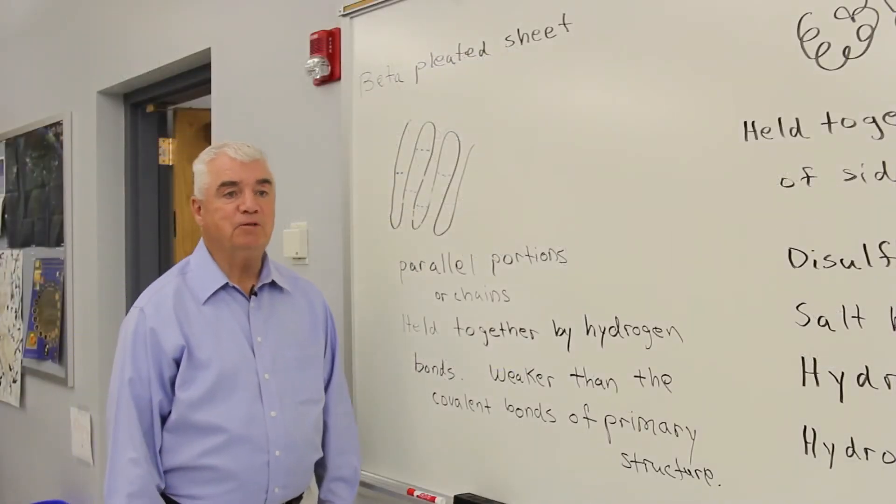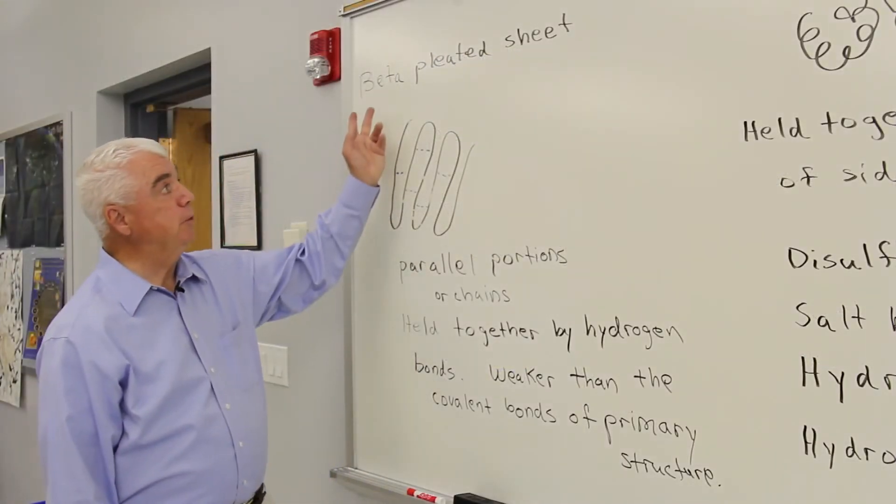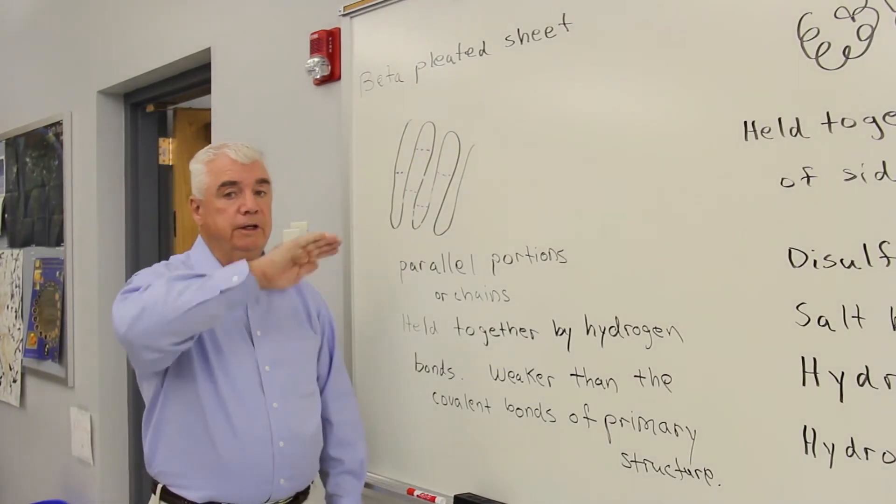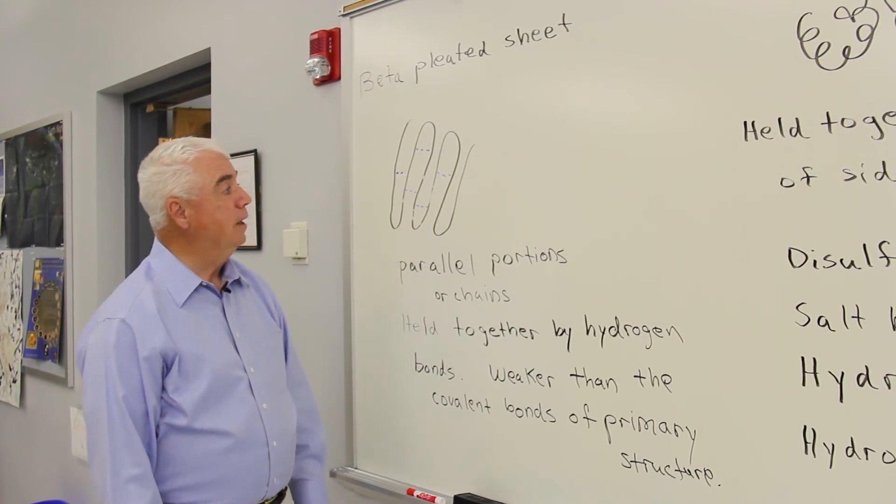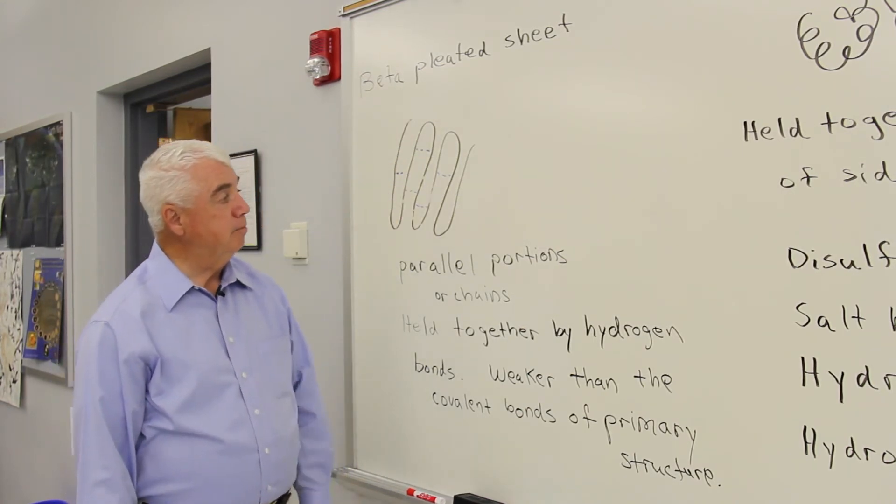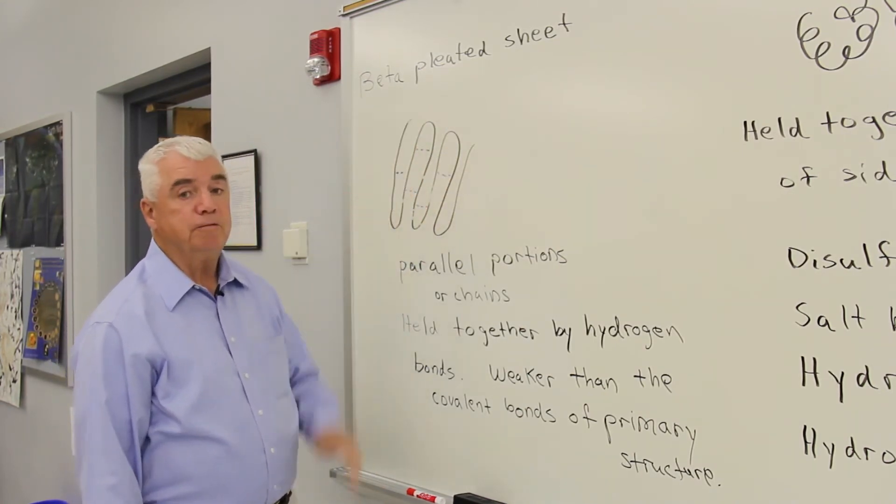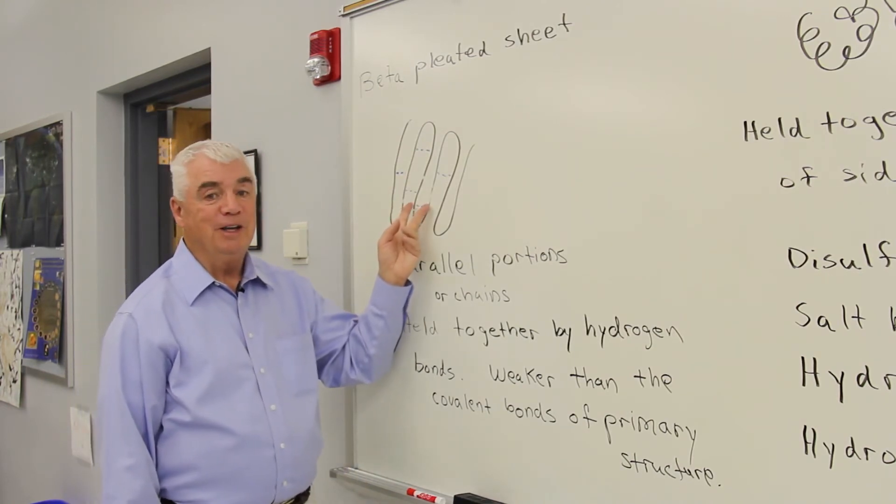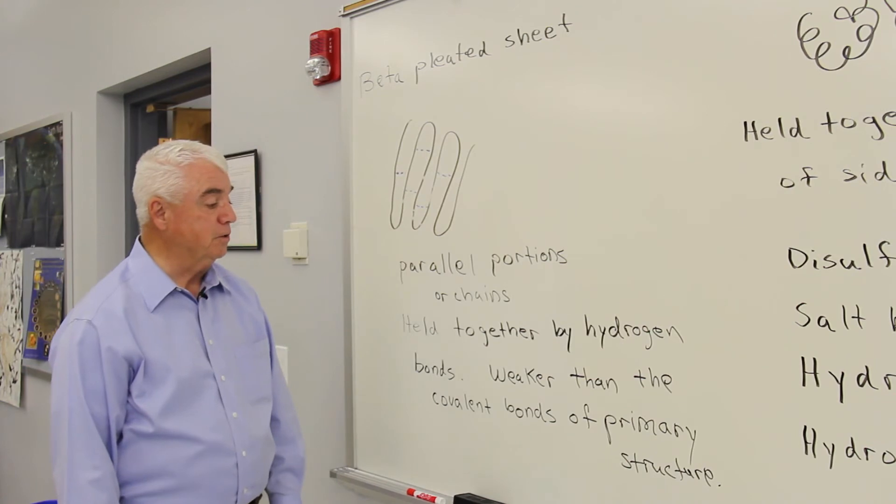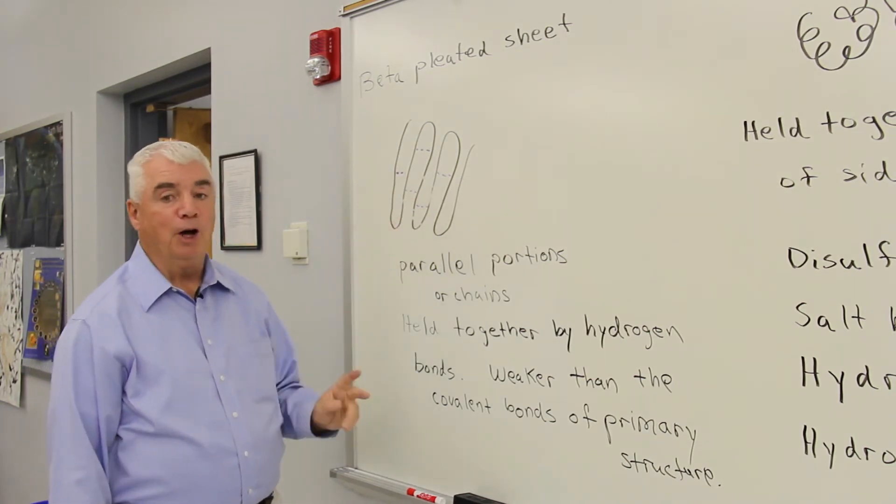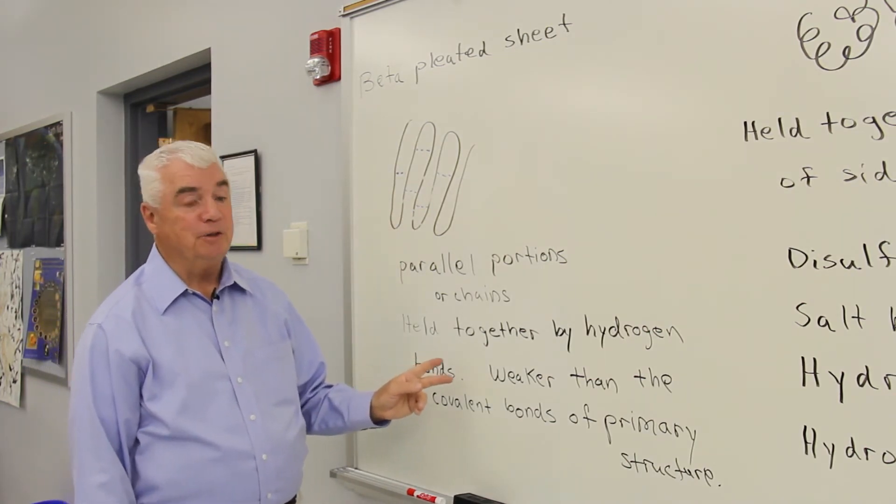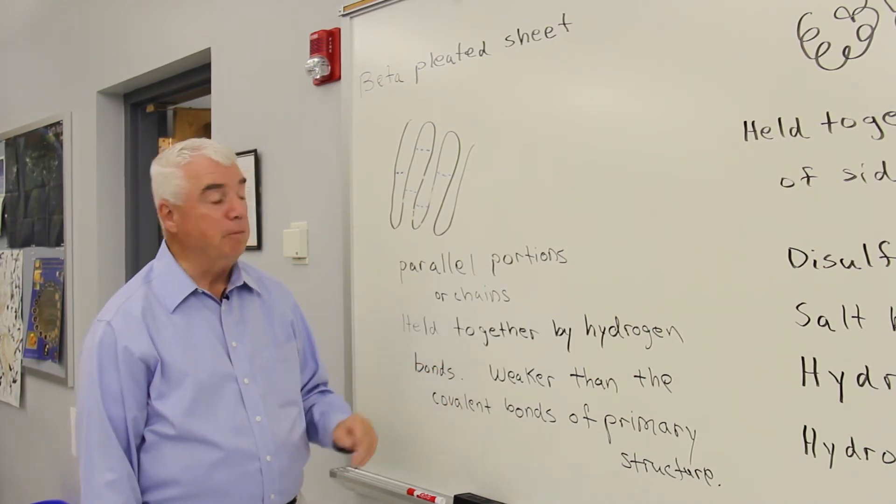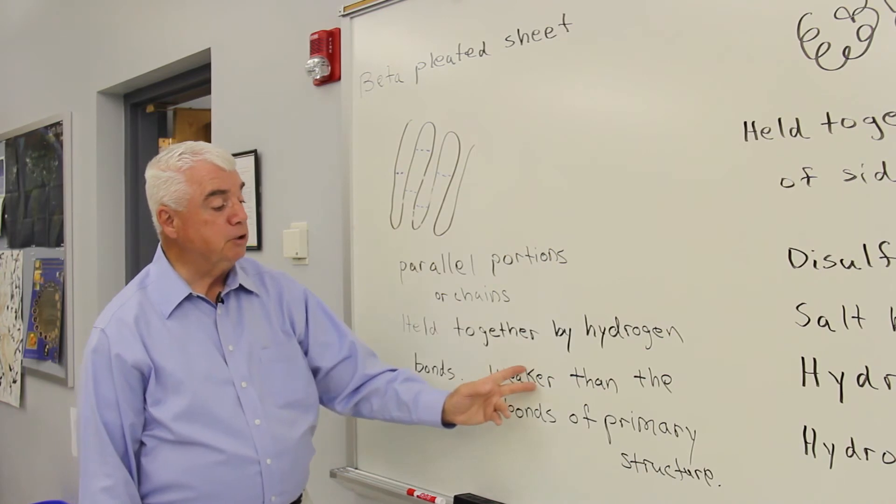Let's look at the second type of secondary structure. The second type of secondary structure is referred to as beta pleated sheet. It's sort of a quilted structure rather than a helical form where we have parallel chains or portions of chains that are held together again by hydrogen bonds between the amide linkages. These hydrogen bonds are weaker now than those forces that held the primary structure together. They're not covalent bonds, but much, much weaker.